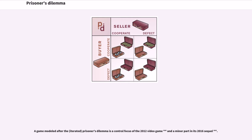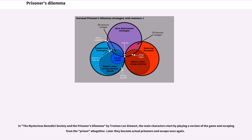A game modeled after The Prisoner's Dilemma is a central focus of the 2012 video game and a minor part in its 2016 sequel. In the Mysterious Benedict Society and The Prisoner's Dilemma by Trenton Lee Stewart, the main characters start by playing a version of the game and escaping from the prison altogether. Later they become actual prisoners and escape once again.